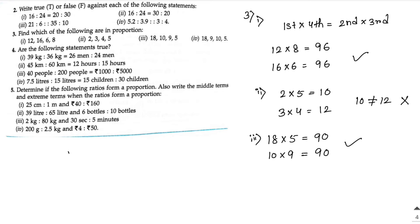Fourth one: 18 × 5 = 90 and 9 × 10 = 90. Equal, so yes — in proportion. Now next, sum number 4: are the following statements true?